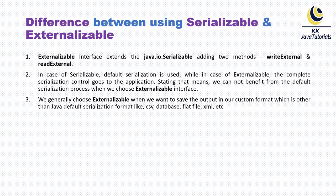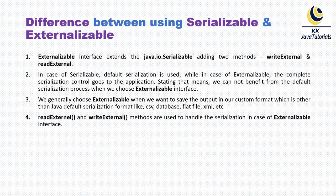We generally choose Externalizable when we want to save output in a custom format other than Java's default serialization format — such as CSV, database flat files, XML, etc. When you perform serialization using the Serializable interface, the object output is saved in byte format. But when you want output in a custom format like CSV, flat files, or XML, you achieve the serialization process using the Externalizable interface.